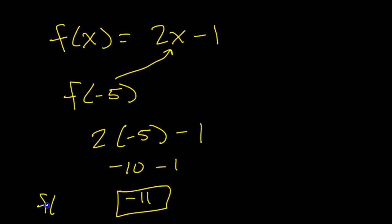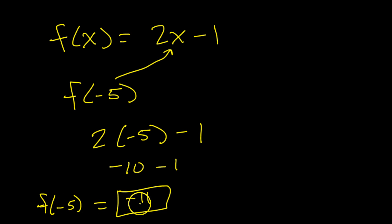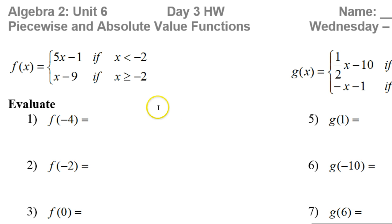So f of negative 5 equals negative 11. We're trying to do something similar to that, only with piecewise functions.